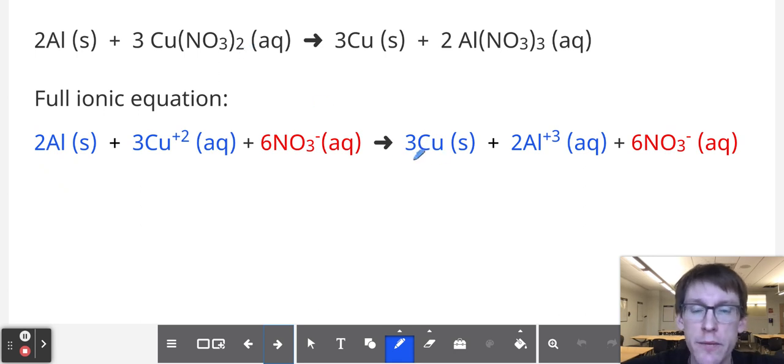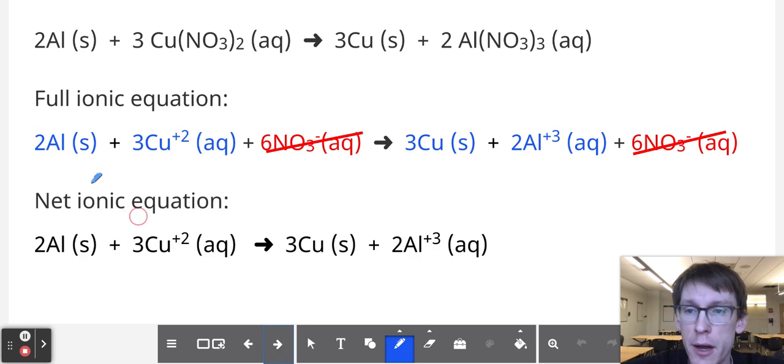And then on the right side, for products, we have 3 copper metal plus 2 aluminum plus 3 ions plus those same 6 nitrate ions. So just looking through this, the aluminum has changed because it went from solid to aqueous and neutral to plus 3. The copper has changed because it was aqueous and plus 2, but it became solid and neutral. But what hasn't changed is the nitrate. This is a spectator ion, and so those spectator ions can be crossed out when we write the net ionic equation, which just simplifies everything, looking at only what has changed.